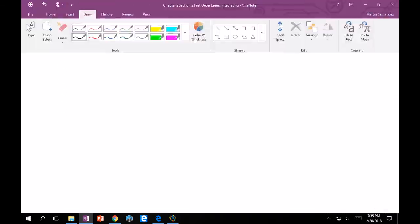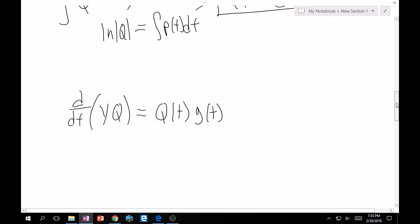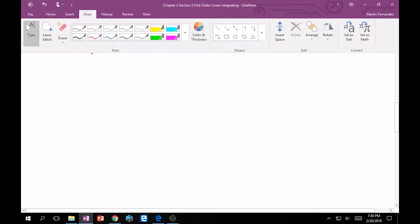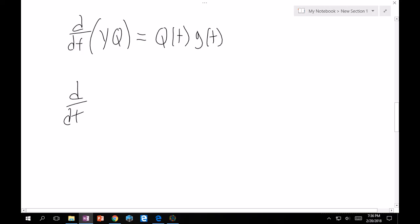So now that we have this, we can write the following. So remember from up above, the motivation was that d/dt of yQ would equal Q(t) times g(t). And we just solved for Q. So let's substitute that in. d/dt times y e to the integral of p(t) dt is equal to e to the integral p(t) dt g(t).